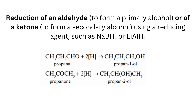Reduction of an aldehyde to form a primary alcohol, or of a ketone to form a secondary alcohol, using a reducing agent such as NaBH4 or LiAlH4. Propanal on reduction gives propan-1-ol, and propanone on reduction gives propan-2-ol.